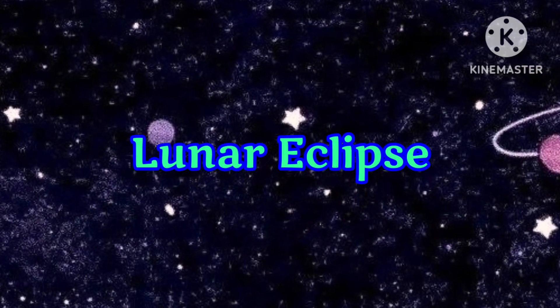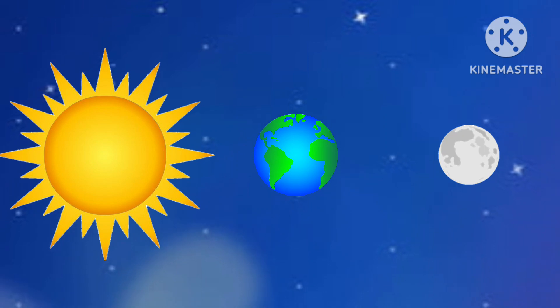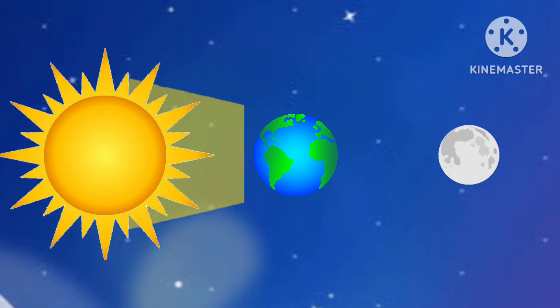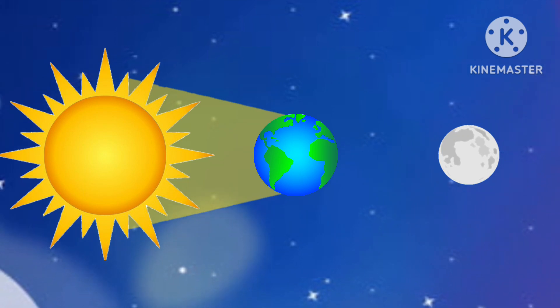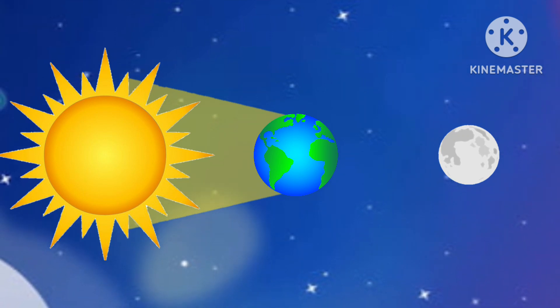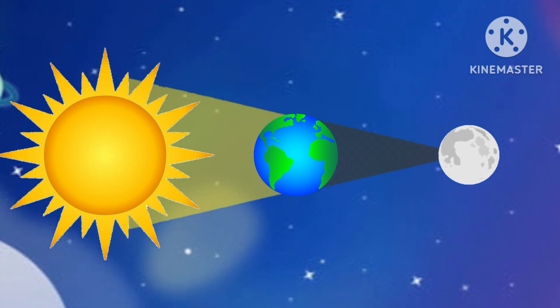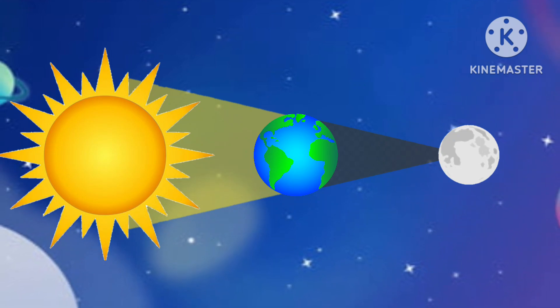Lunar eclipse occurs when the earth comes in between the sun and the moon. As a result, the earth blocks the light of the sun from reaching the moon's surface and casts its shadow on the moon. It occurs on a full moon day.